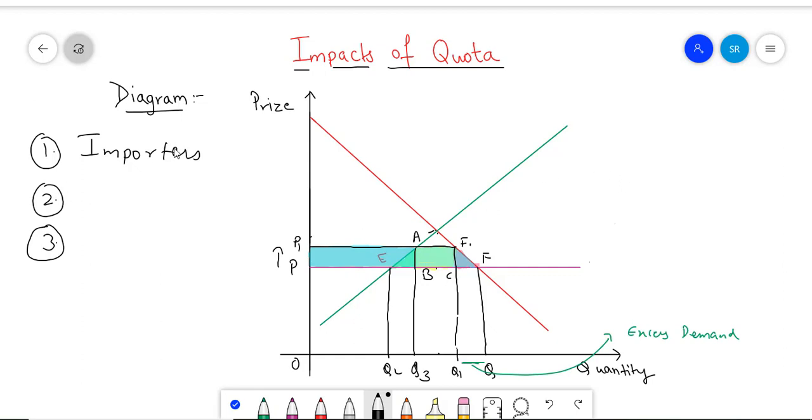However, there is a second alternative as well. If the government is allowing quota through licensing system, then the importers might have to share a certain amount of revenue with the government. Hence, both the government as well as the importers might share the revenues.